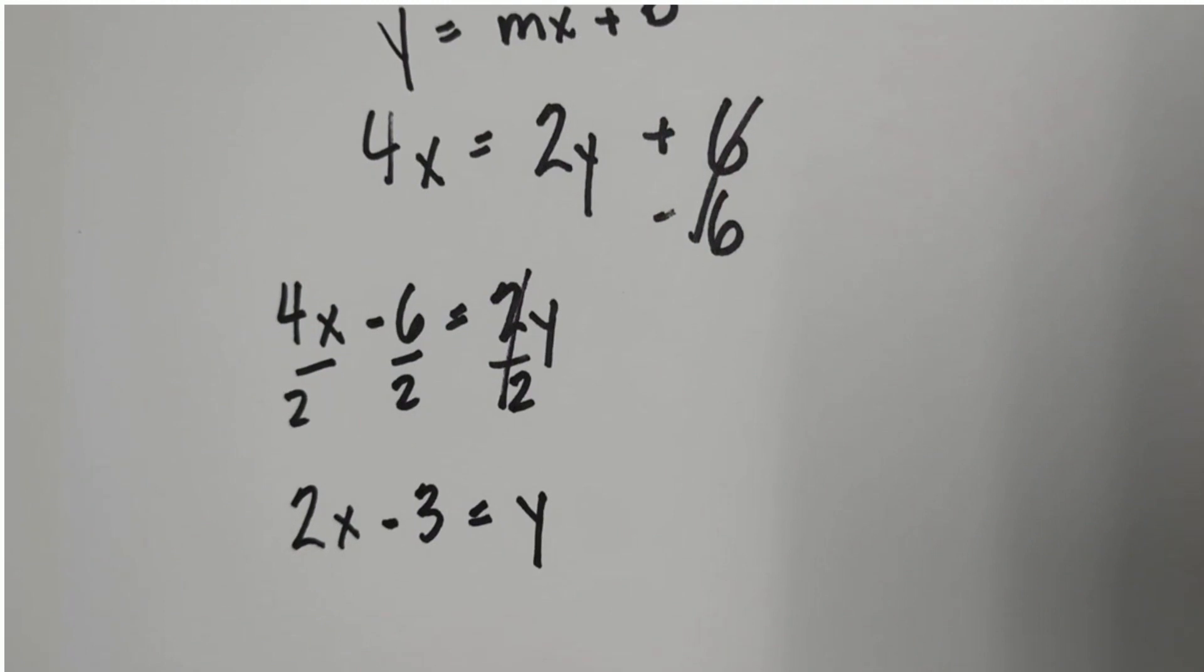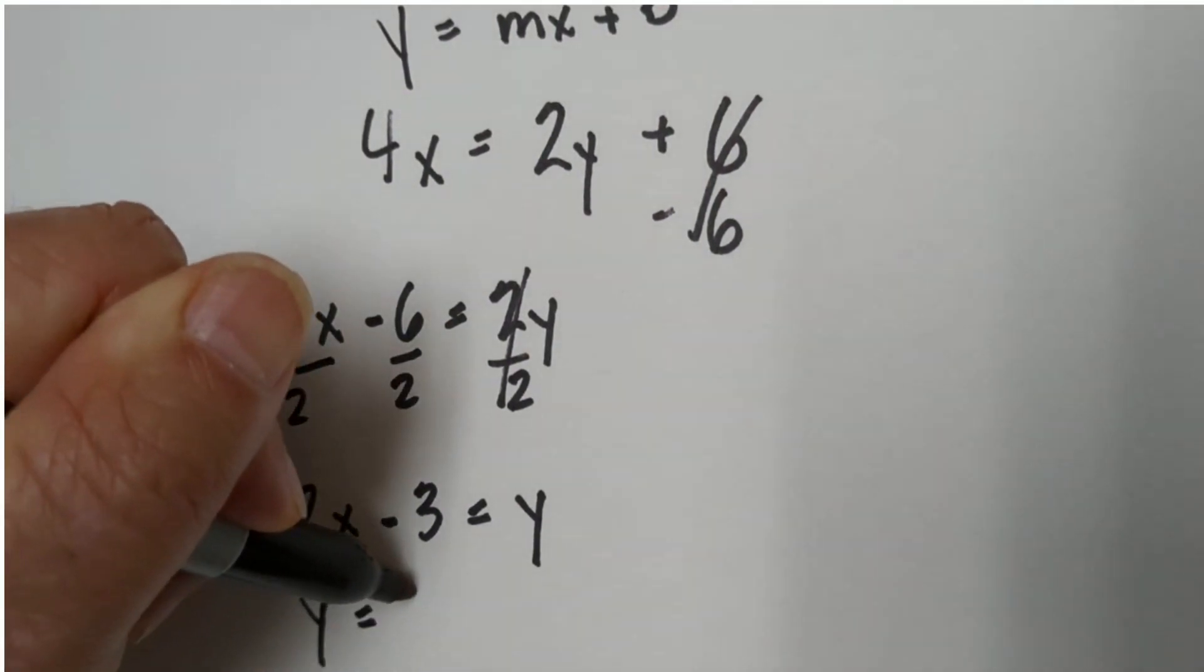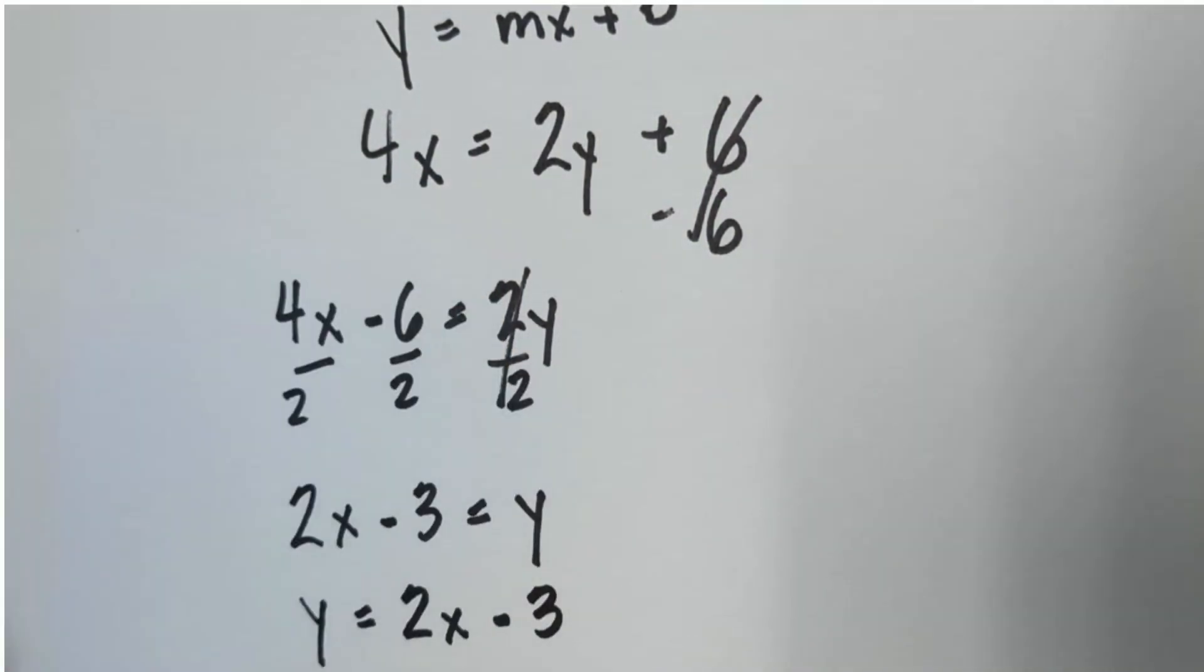Now if you'd like, if you don't like it in this format, you can just switch to the other side: y equals 2x minus 3.